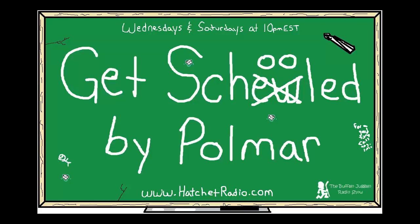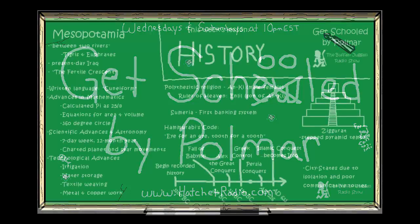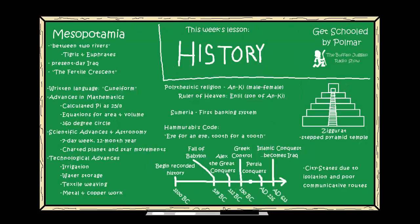We're going to start with the first civilization: Mesopotamia. If you remember back to your ninth grade social studies and history classes, there were four — actually five — but four main river valley civilizations: Mesopotamia, which we're going to talk about; the Indus River Valley; the Yellow River Valley in China; and the Nile River Valley, which is Egypt. Today we're going to talk about Mesopotamia.